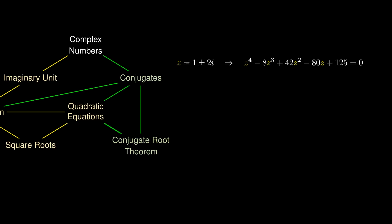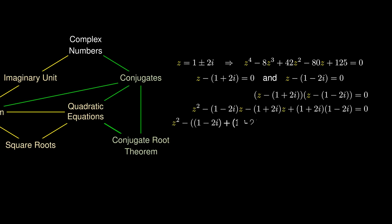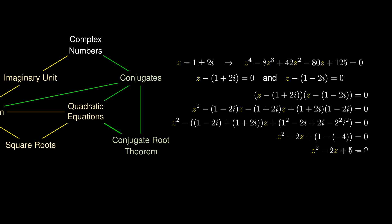This tells us that z - (1 + 2i) = 0 and likewise z - (1 - 2i) = 0. Multiplying them together gives 0, and expanding the left-hand side using complex number arithmetic gives the quadratic z² - 2z + 5 = 0.